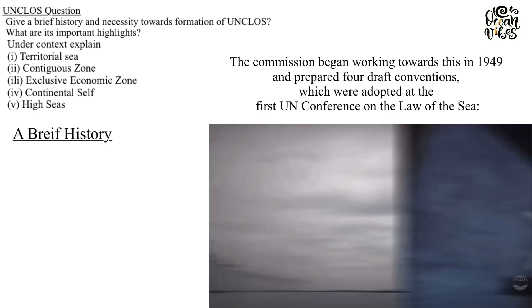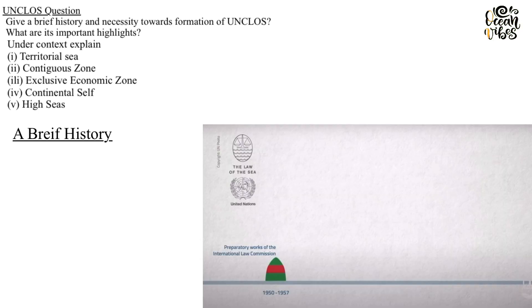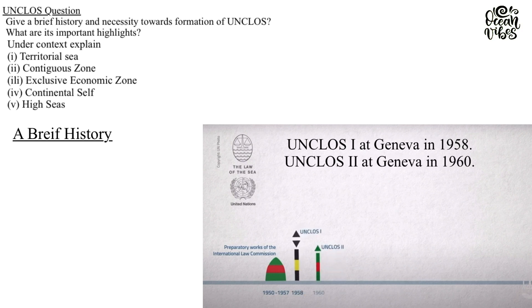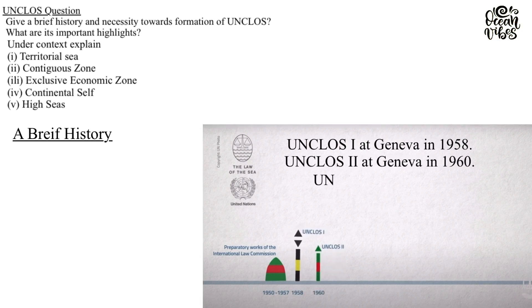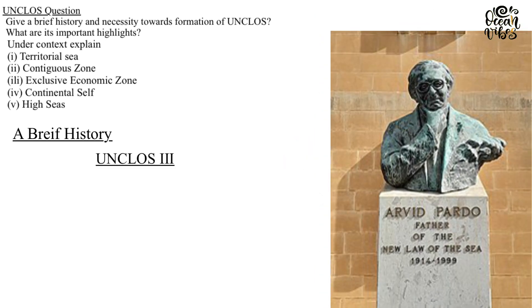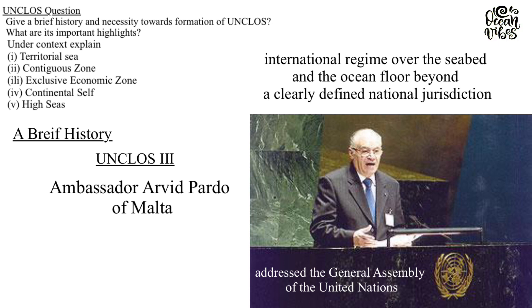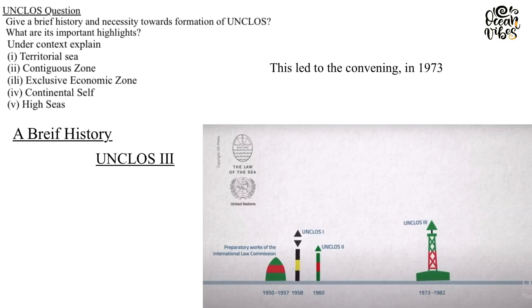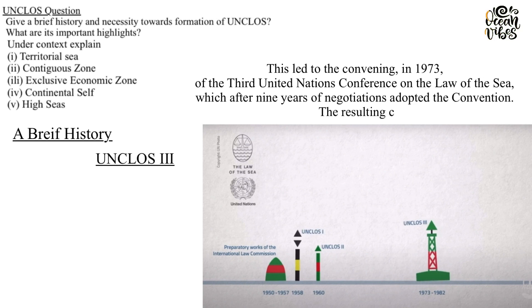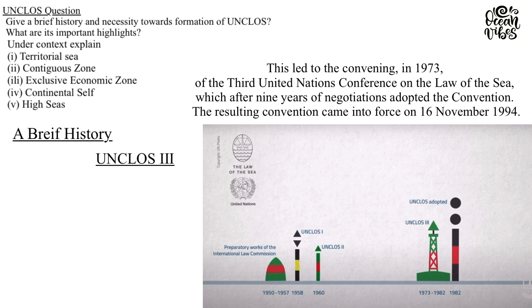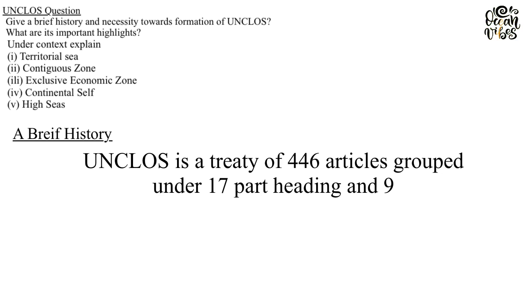The commission began working towards this in 1949 and prepared four draft conventions, which were adopted at the First UN Conference on the Law of the Sea (UNCLOS I) at Geneva in 1958, followed by UNCLOS II at Geneva in 1960. The origins of UNCLOS III date from 1st November 1967, when Ambassador Arvid Pardo of Malta addressed the UN General Assembly, calling for an effective international regime over the seabed and ocean floor beyond national jurisdiction. This led to the convening in 1973 of the Third United Nations Conference on the Law of the Sea, which after nine years of negotiations adopted the Convention. The resulting convention came into force on 16 November 1994.